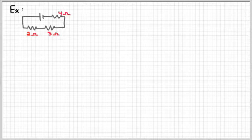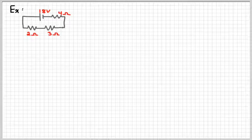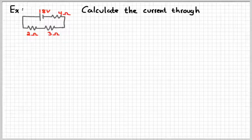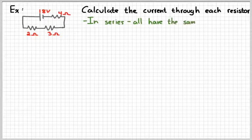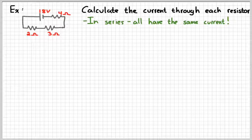So let's look at a simple example. Suppose we have this circuit where I have a 2-ohm, a 3-ohm, and a 4-ohm resistor, all connected in series to an 18-volt battery, and our job is to figure out how much current goes through each resistor. The first thing to realize is that since they're in series, they're all going to have the same current. You may think we're looking for three answers here, but really we're only looking for one answer.